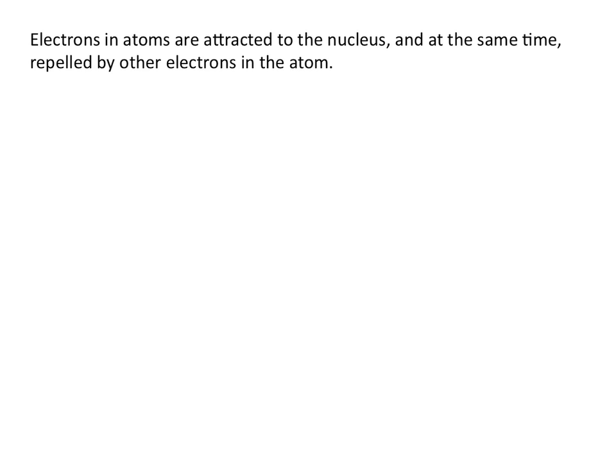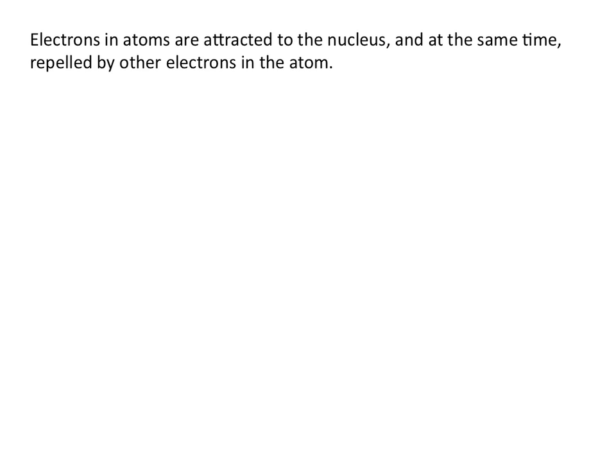Although negatively charged electrons in atoms are attracted to the positively charged nucleus, they are at the same time repelled by other electrons in the atom. The effective nuclear charge is the average nuclear charge felt by an individual electron in an atom, taking into consideration the shielding effect of inner shell electrons. We'll explore in more detail what that means as we go through this tutorial.